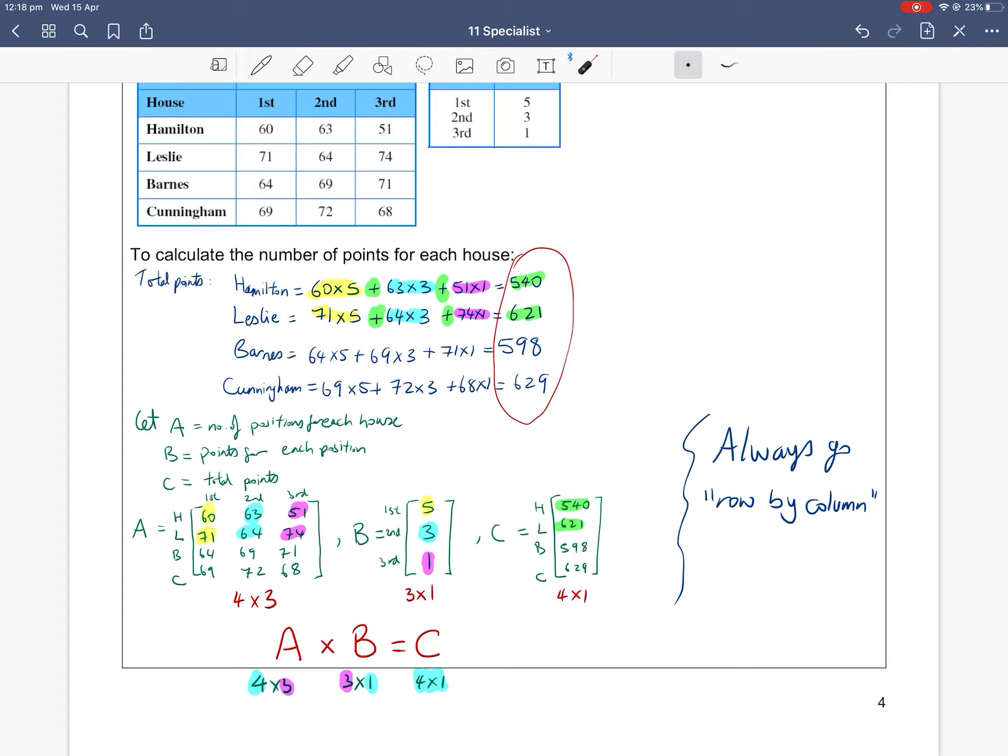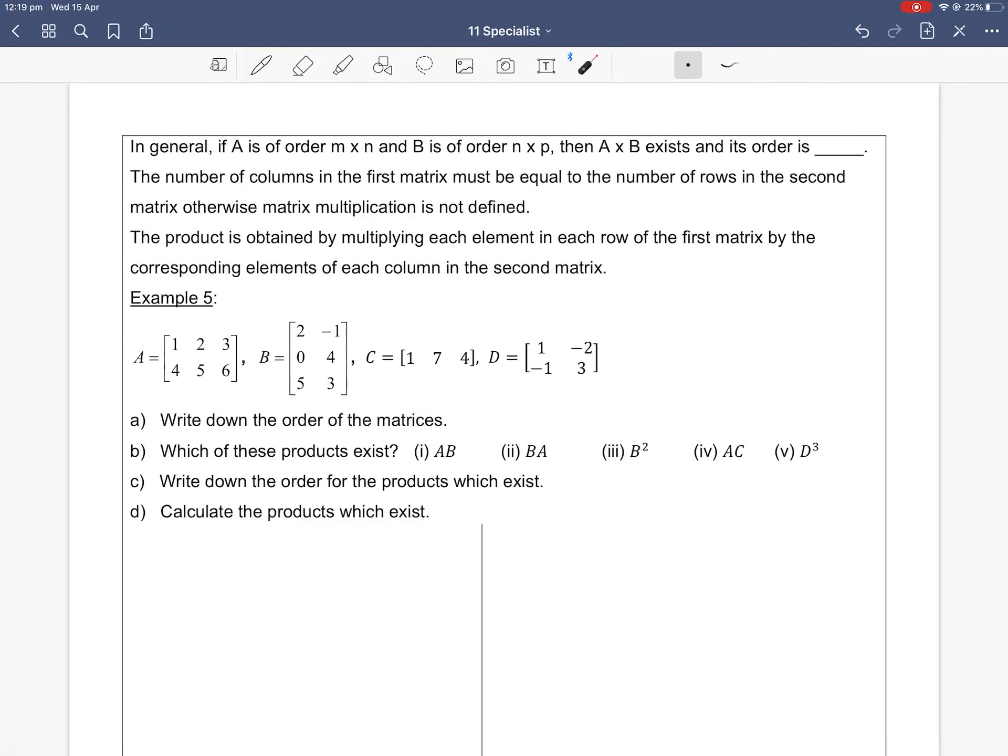We'll explain a little bit more what it means with example five over the page. But before we get to example five, just re-emphasizing the importance of matching up the inside dimension. So if I have a matrix which is order M by N, and I have another matrix N by P, then as long as the inside dimensions match up, you can multiply the matrix. And the resulting matrix is the outside number dimensions, which is M by P. So make sure here that your number of columns in the first matrix is the same as the number of rows in the second matrix. Otherwise, it is not defined, because you can't multiply them.